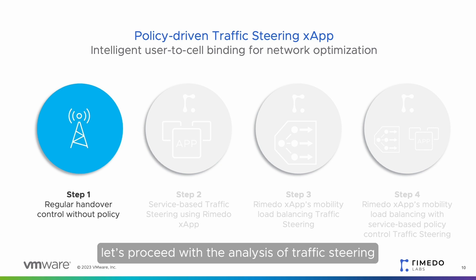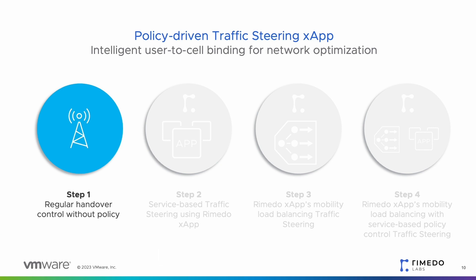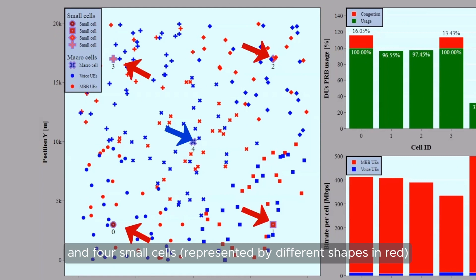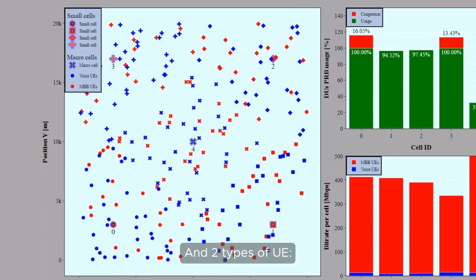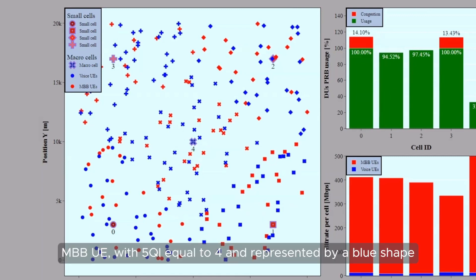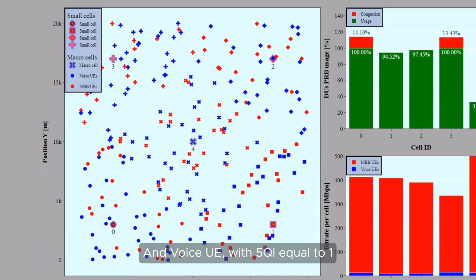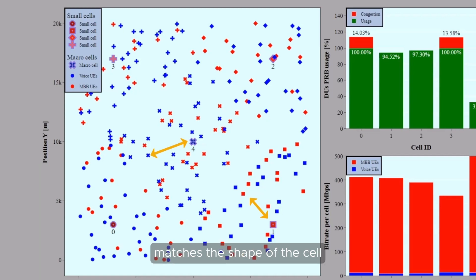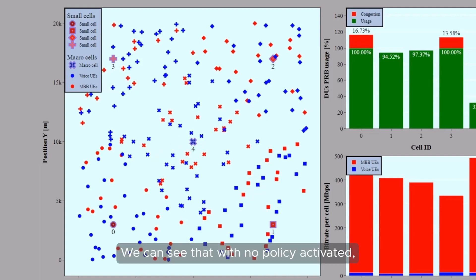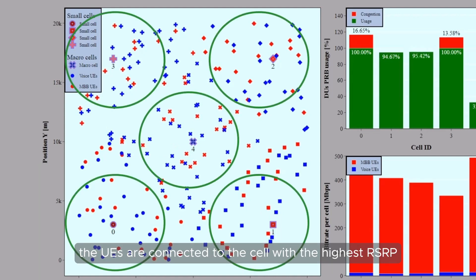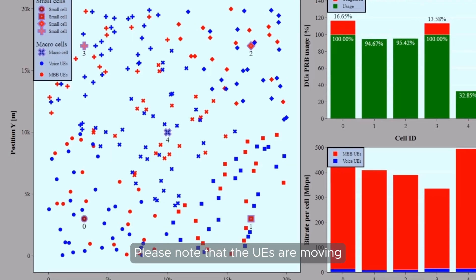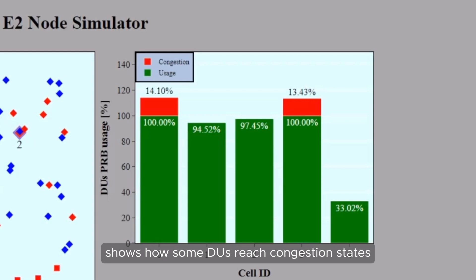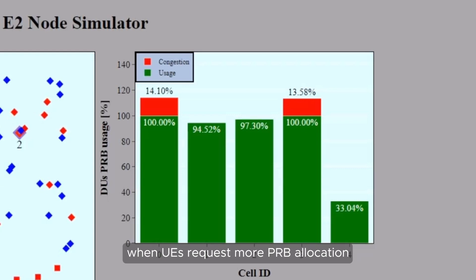With the testbed up and running, let's proceed with the analysis of traffic steering without X-App intervention. The GUI shows an area with five cells: one macro cell, represented by an X in blue, and four small cells, represented by different shapes in red, and two types of UE — MBB UE with 5QI equal to 4, represented by a red shape. The type of shape assumed by each UE matches the shape of the cell the UE is currently associated with. With no policy activated, the UEs are connected to the cell with the highest RSRP. The next graph shows the served bitrate per cell, and the PRB usage per DU graph shows how some DUs reach congestion states when UEs request more PRB allocation than the cell can handle.